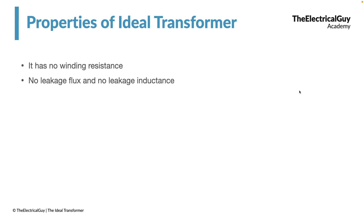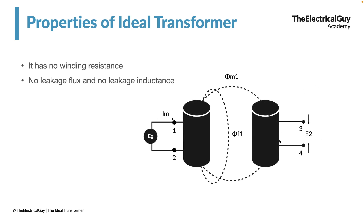The next property is that it has no leakage flux and no leakage reactance. In a practical transformer, when the secondary winding is brought near the primary, some part of the flux gets linked with the secondary and some does not — that unlinked portion is called leakage flux. But in the ideal transformer, all flux produced by the primary winding gets linked with the secondary. If primary produces 100 units of flux, all 100 get linked. Since there is no leakage inductance, there is no leakage flux.